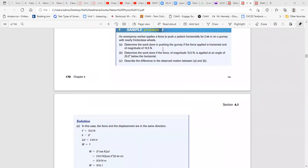Look at this question. An emergency worker apply a force to push a patient horizontal for 2.44 meter on a gurney with nearly frictionless wheels. So we don't have friction. Determine the work done by pushing if the magnitude of the force is 15.5. We have displacement. What is the angle? So you push this way. The force is this way. Your displacement is this way. So the angle between these two vectors is 0.